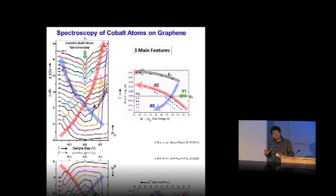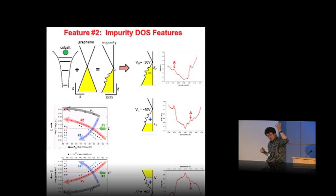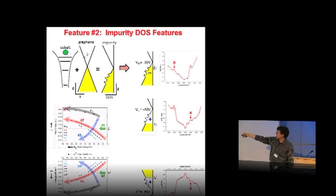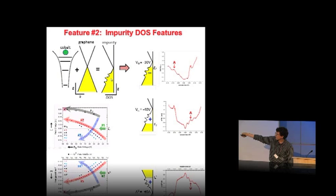The idea is that if you take an isolated cobalt atom — which has atomic energy levels — and drop it onto a piece of graphene, those atomic energy levels will hybridize with the graphene, leading to defect states in the density of states of graphene. We can see those defect states with STM spectroscopy. Something new is that we can change the energy level of those defect states with the back gate — we can gate the surface and move those defect states up and down in energy. That allows us to fill or deplete those defect states with charge.